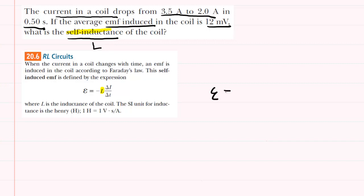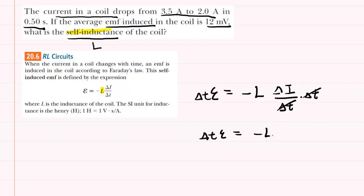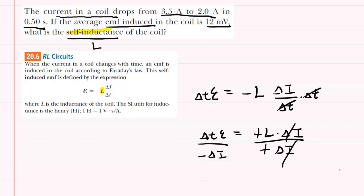We can do that by first rewriting the equation here on the side. We will solve for L by first multiplying both sides of the equation by delta T — the delta T's will cancel out on the right-hand side. Then we will solve for L by dividing both sides by negative delta I, so the negatives and the delta I's cancel out.